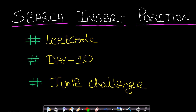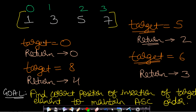Let us now look at some examples to get a better understanding. Let us assume our array has four elements and our target element is initially t equals to five. You can see that five is already present at index two. Since this element is already present in the array, we just return its index, which is two.